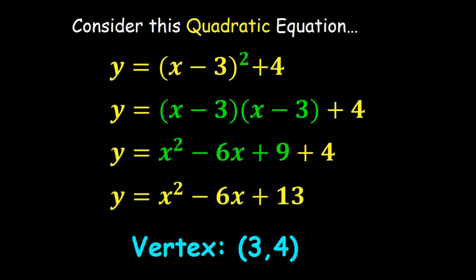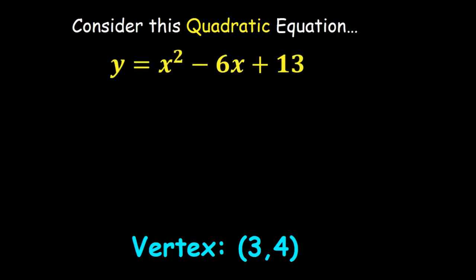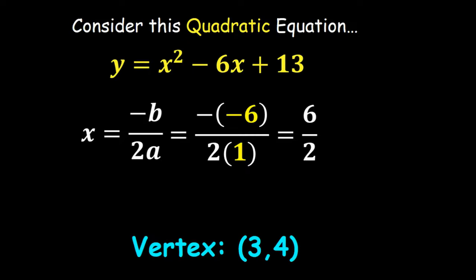That simplifies to x squared minus 6x plus 13. Write that on the third line of your slip of paper — that equation is in standard form. Standard form also has a vertex, found by using the formula negative b over 2a. For this problem that works out to 6 over 2, which is 3 — the same x-value as before.